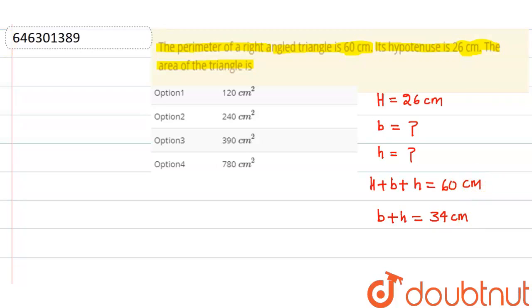Now, we know one thing. By the Pythagoras theorem, we know that capital H squared equals small b squared plus small h squared. Since we know the value of hypotenuse, b squared plus h squared equals 26 whole squared, that is 676.